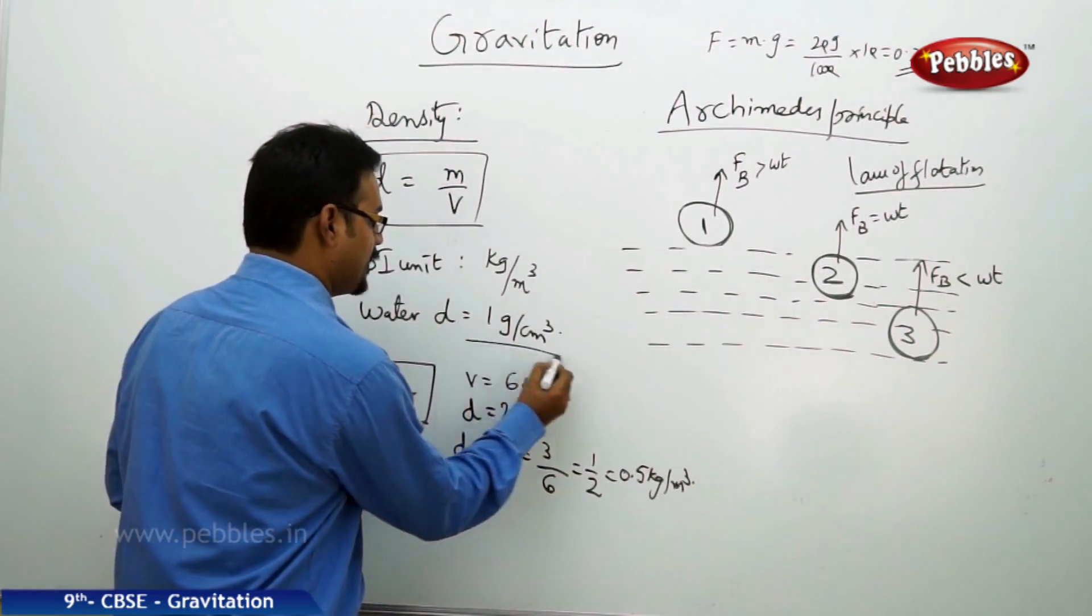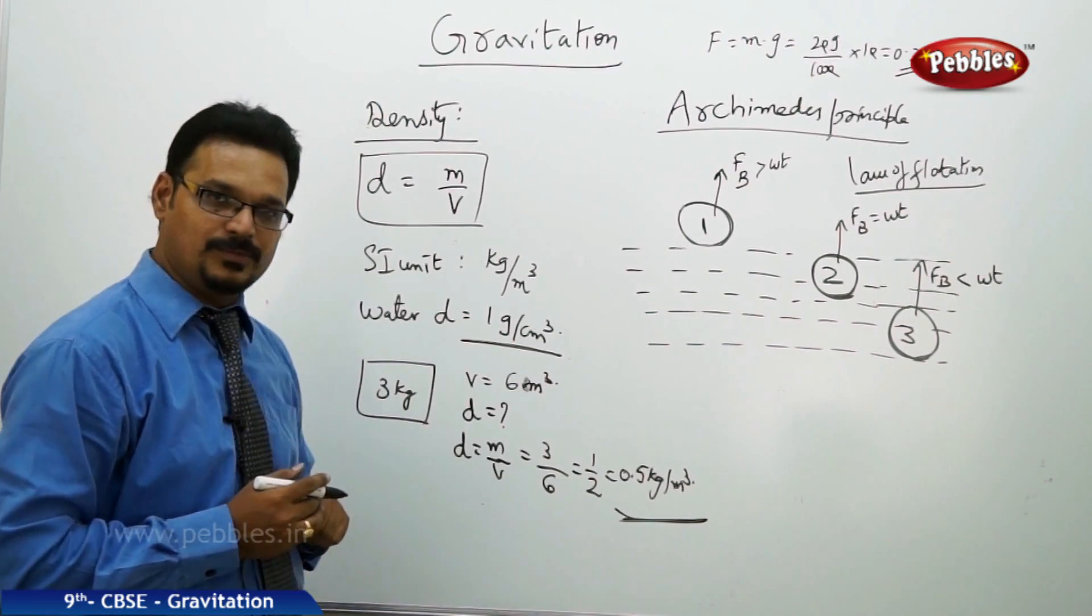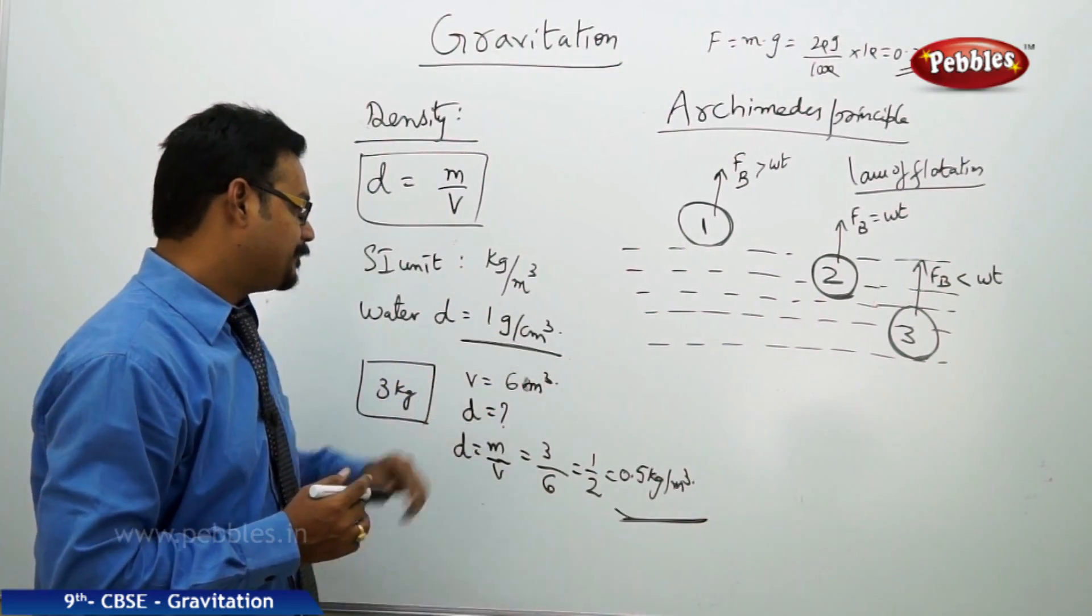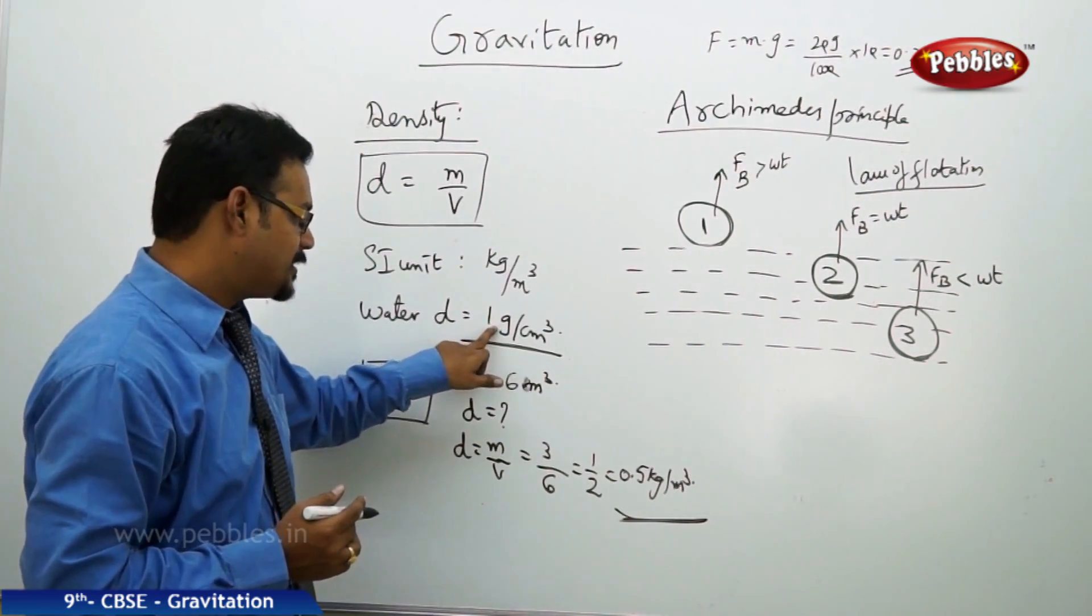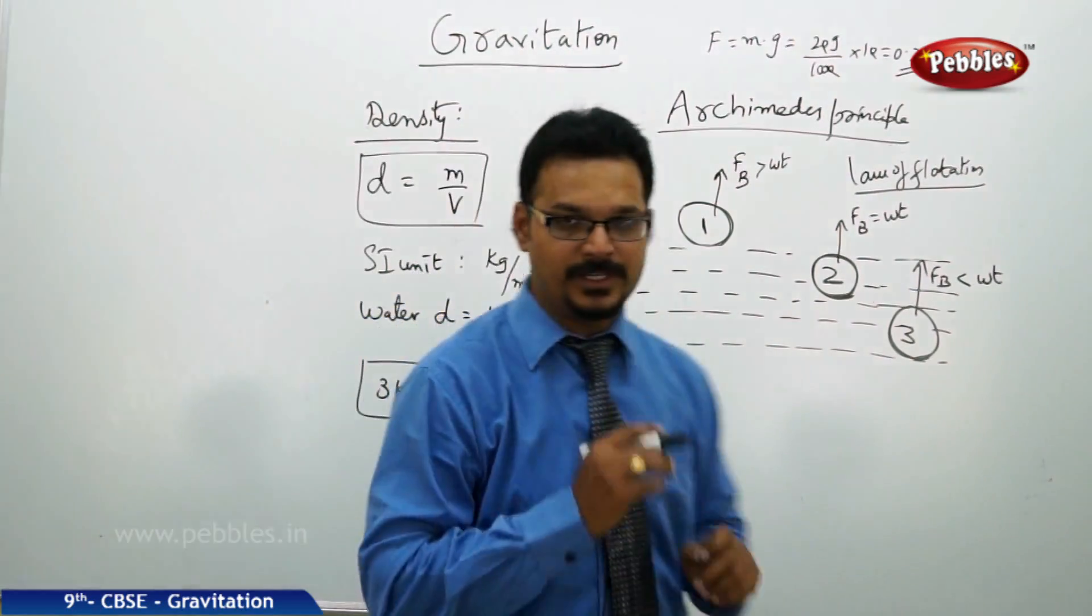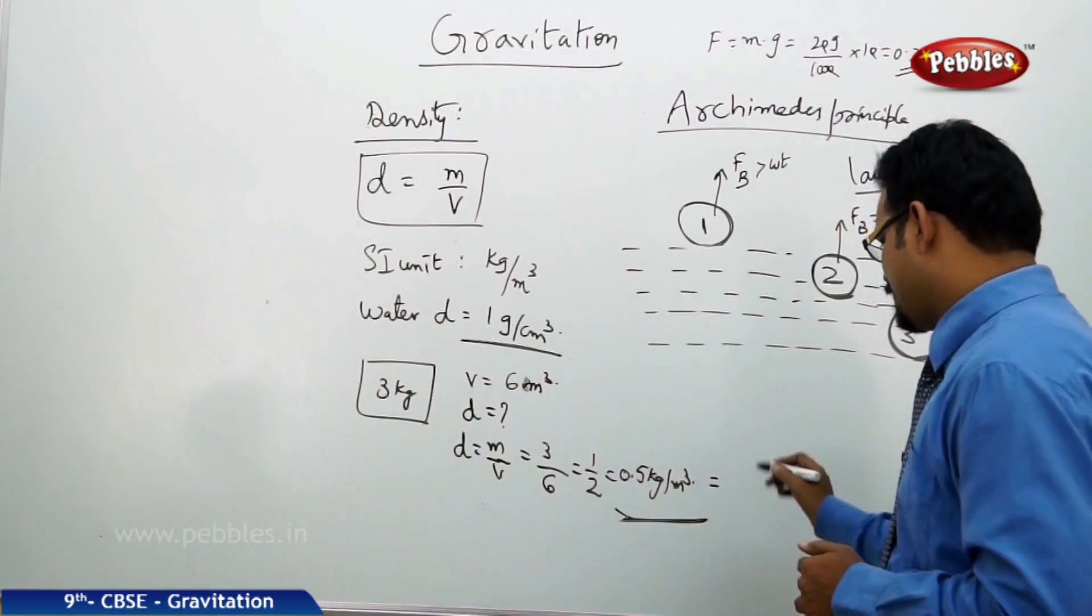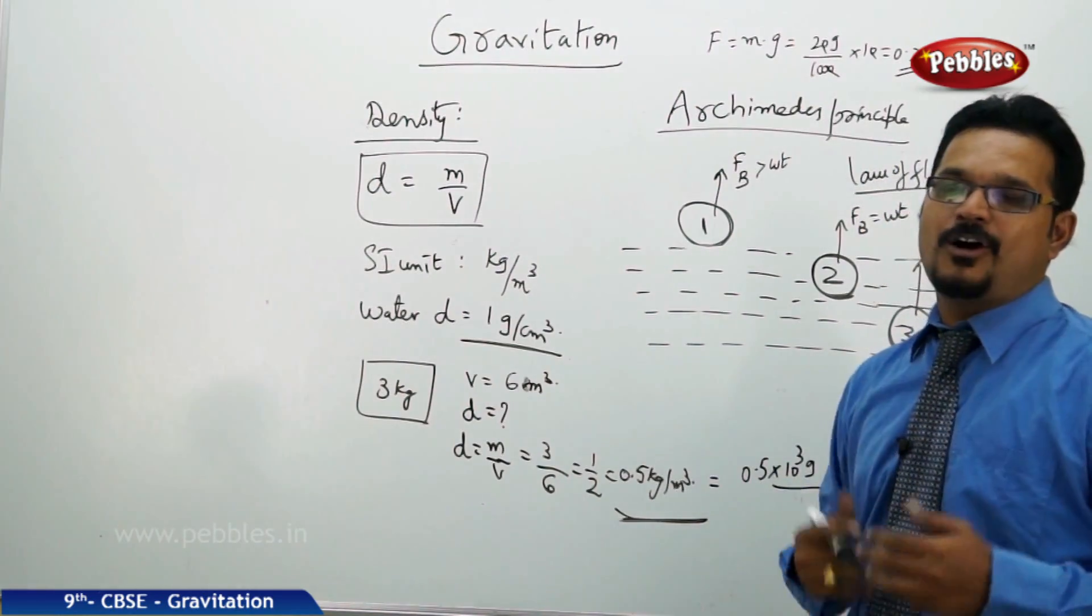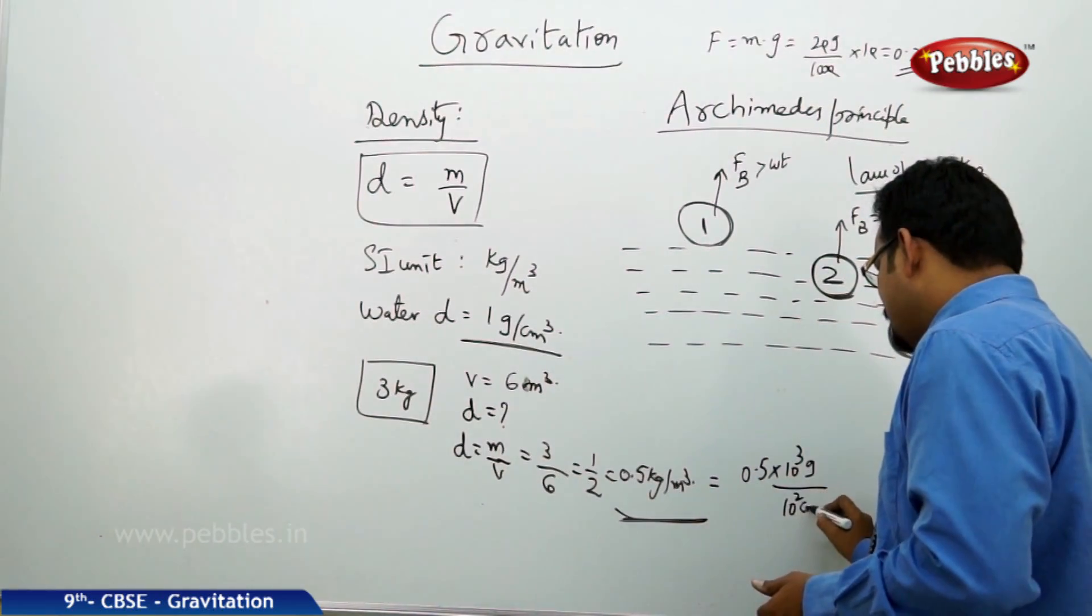Now if you compare the water density and this block density, see carefully: water density is 1 gram per centimeter cube, this block density is 0.5 kg per meter cube. Now you need to compare. So it is gram per centimeter cube, it is kilogram per meter cube, so either you need to convert this into kilogram per centimeter cube or this into gram per centimeter cube. So what we do here, let me take the body density to convert into gram per centimeter cube for the comparison. So 0.5 into kg means 10³ grams by meter. 1 meter, how many centimeters? 1 meter = 100 centimeters, so 10² cm, whole cube.